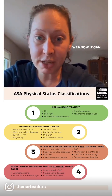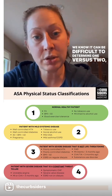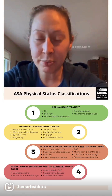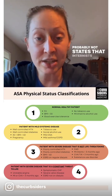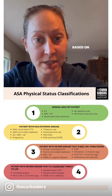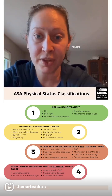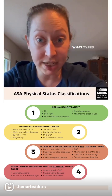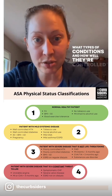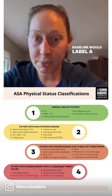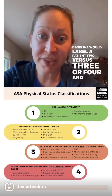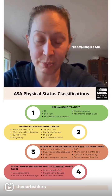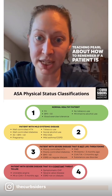We know it can be difficult to determine one versus two, two versus three, and even three versus four — and five and six are probably not states that internists will see in the office based on how sick those patients are. This infographic gives some really high-yield examples of what types of conditions and how well they're controlled at baseline would label a patient two versus three or four. Check out the episode itself for Dr. Selzer's amazing teaching pearl about how to remember if a patient is ASA 4 or not.